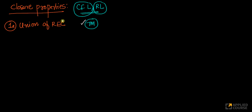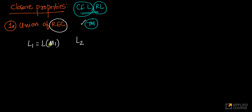Let's look at recursive languages first. Assume I have two recursive languages L1 and L2 — L1 accepted by Turing machine M1, L2 accepted by Turing machine M2. My question is: is L1 union L2 also recursive?